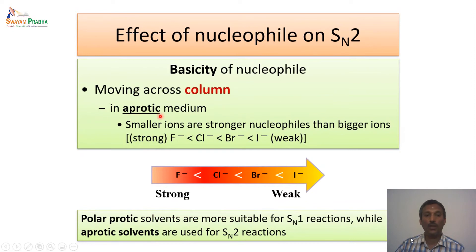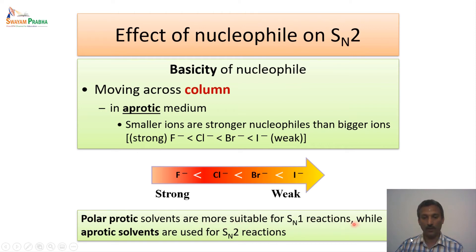But when we move to an aprotic solvent, it is the reverse. Here the fluoride is a much stronger nucleophile because under aprotic conditions there is no solvation. So when there is no solvation, the fluoride is free to move and becomes a very strong nucleophile. So in polar protic solvents, these are very, very suitable for SN1 reactions, and aprotic solvents are generally used for SN2 reactions. This is the important thing you have to remember when we design the reaction.